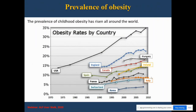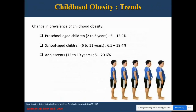When we look at the prevalence of obesity, it has risen all around the world. If we look at England, Canada, and France, we see similar trends in an increase in obesity. The change in prevalence among various childhood age groups has also risen over the last one to two decades. Within preschool children aged 2 to 5 years, it went from 5 to 13.9%, with similar trends seen in the 6 to 11 and 12 to 19 year age groups.